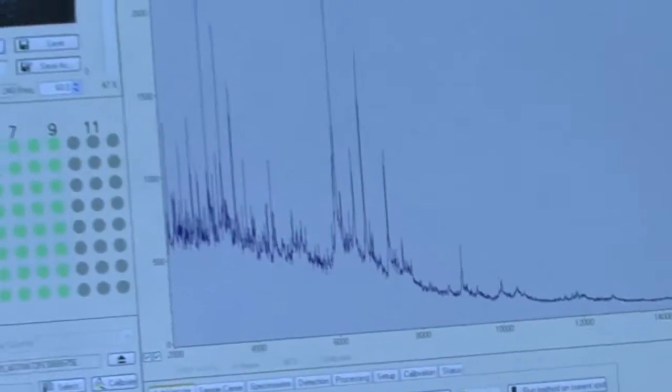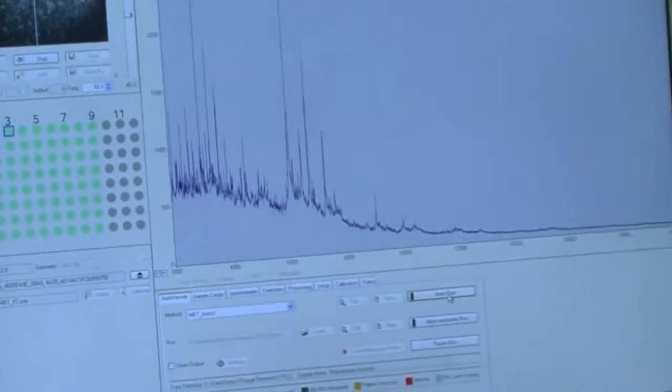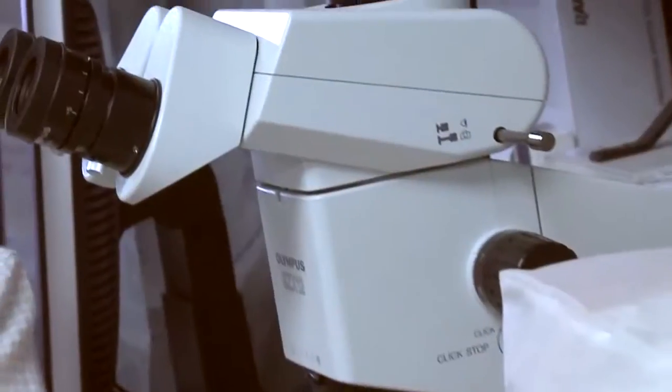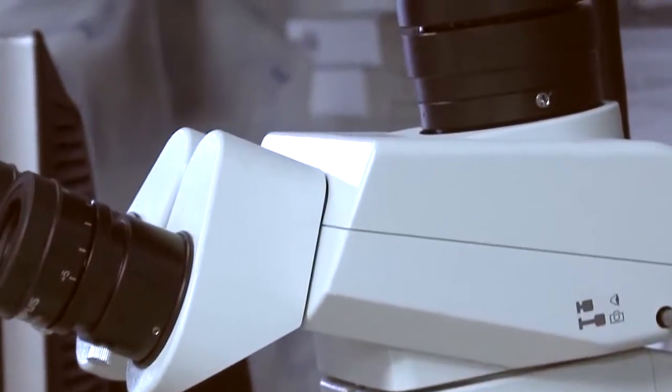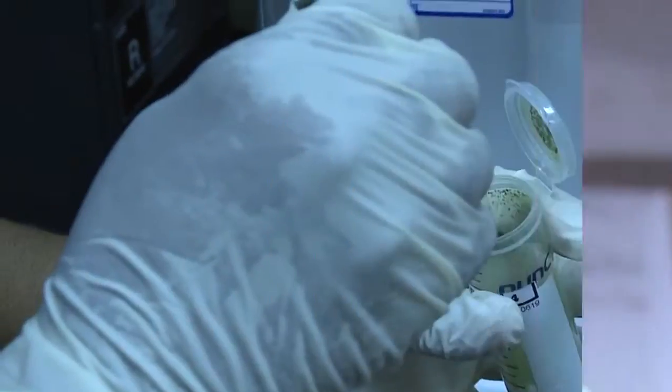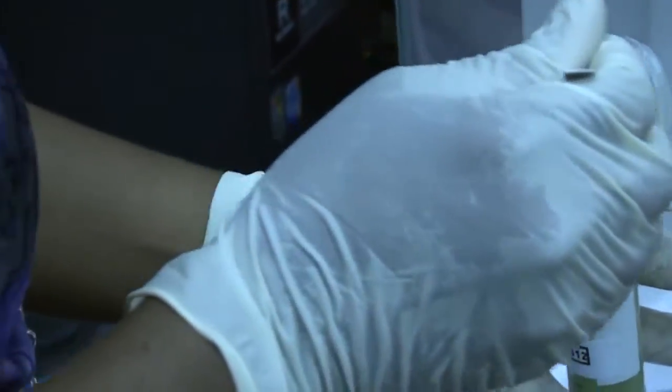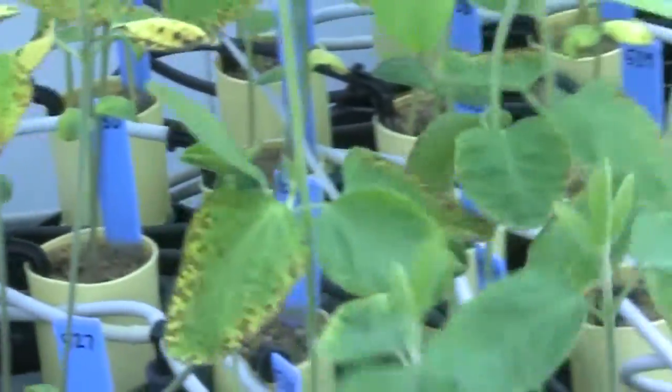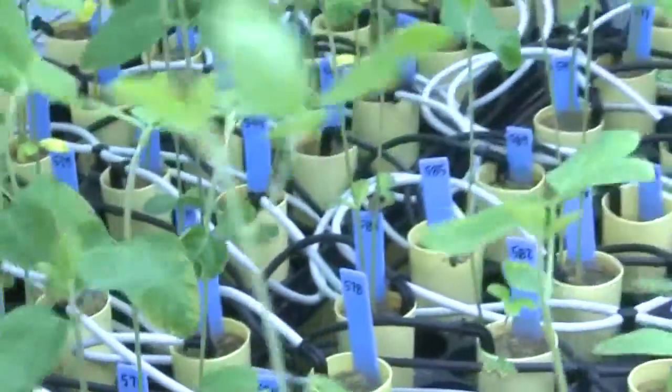The research has two goals. The first is to sequence the genetic information of various nematode types in order to build a database for future reference. The second goal is to utilize this information to genetically alter the soybean plant to become resistant to the nematode.